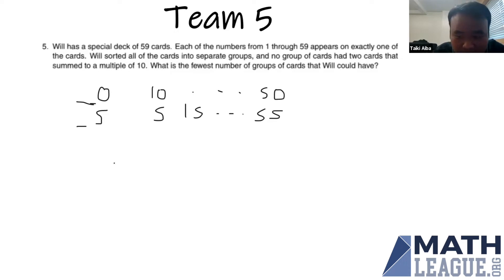After that we see that since there are six numbers here in this list and five numbers in this list, we need at least six groups. Because if there are fewer than six groups, say there are five, then by pigeonhole principle two of the numbers must be in the same group, which is bad since they would sum to a multiple of 10.